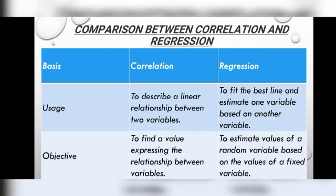The objective of correlation is to find a value expressing the relationship between variables. The objective of regression is to estimate the value of the dependent variable based on the values of a fixed variable.